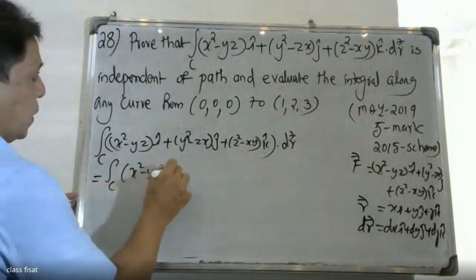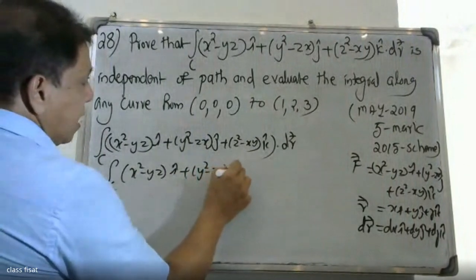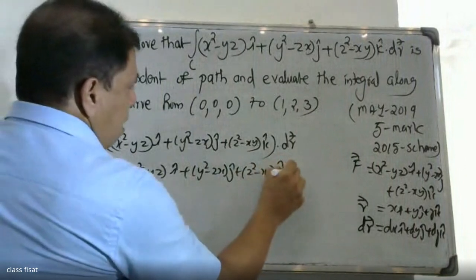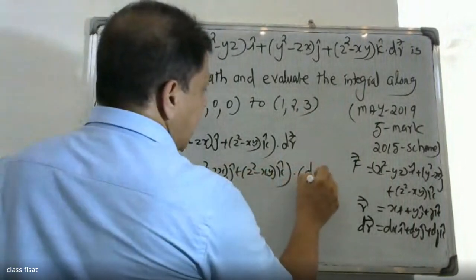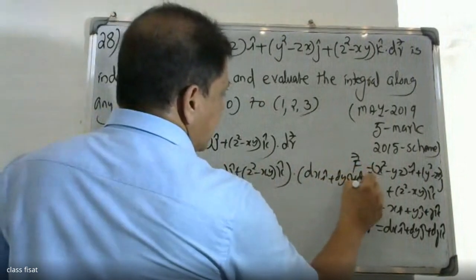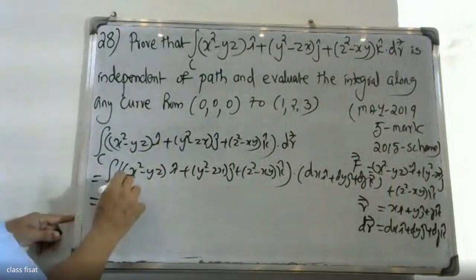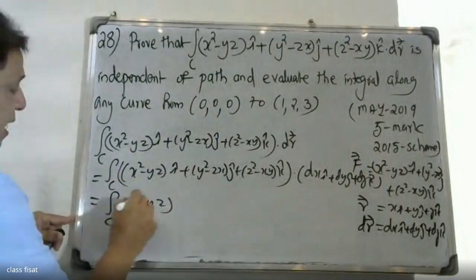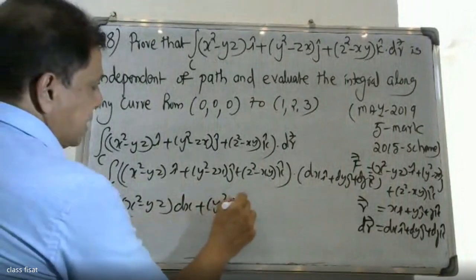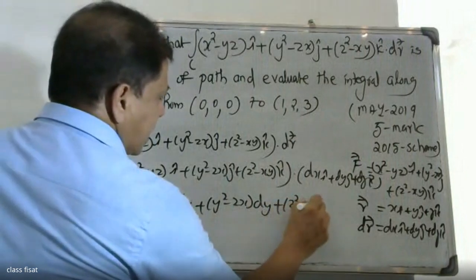We take F · dr where dr = dx·i + dy·j + dz·k. The line integral becomes (x² - yz)dx + (y² - zx)dy + (z² - xy)dz.